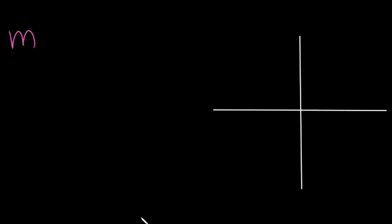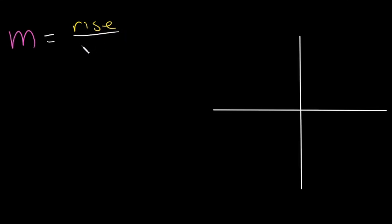So now that we know what slope is, let's look at how we calculate slope. Slope is equal to rise divided by run.